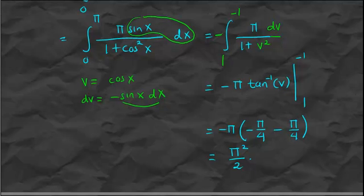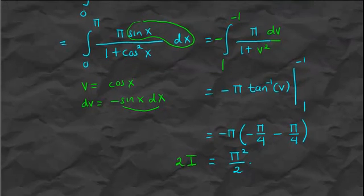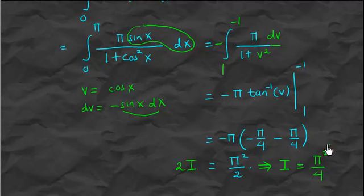But this is not the final answer because what we computed is twice the integral we are looking for, i.e. 2I = pi squared over 2. Therefore I itself equals pi squared over 4. That is our final answer.